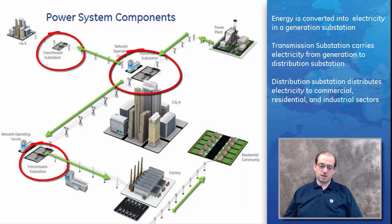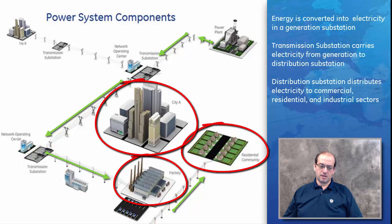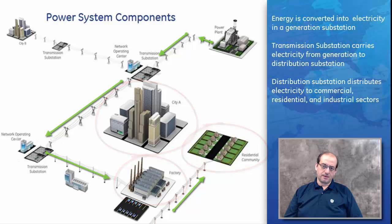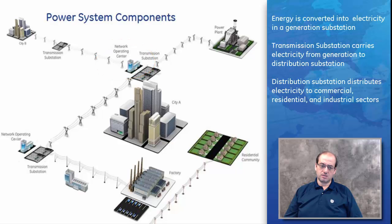The switch yard routes power to an industrial factory, residential area, or commercial area. The end consumer is either industrial, residential, or commercial. The job of the D20 is to harvest data from the substations and relay that data to the control center, allowing the control center to carry out remote controls to the substation if required. If remote control is not sufficient, they would dispatch somebody to the substation based on information provided by the D20.